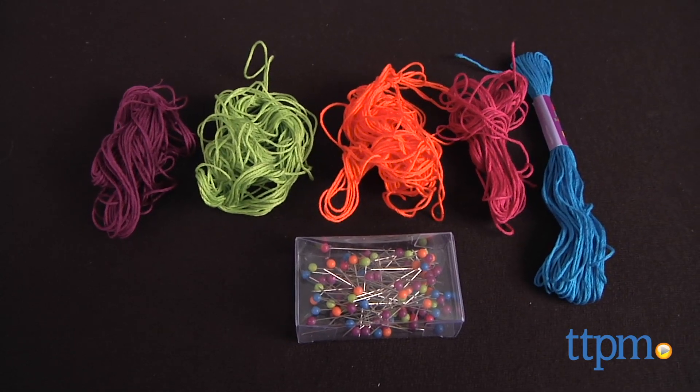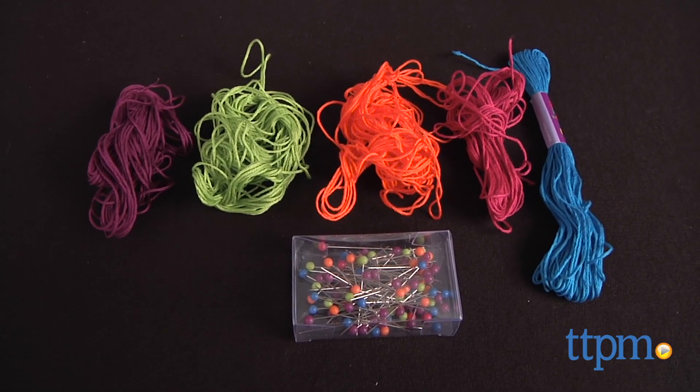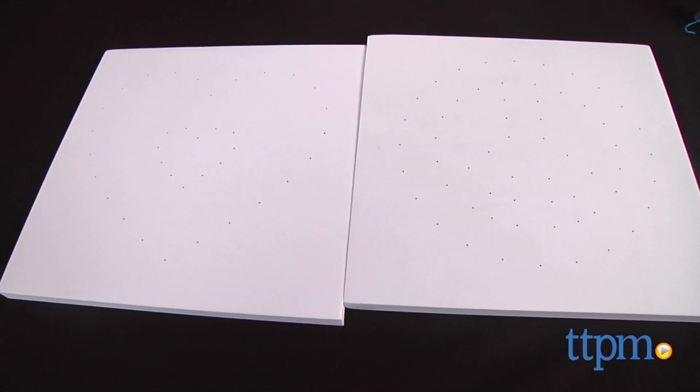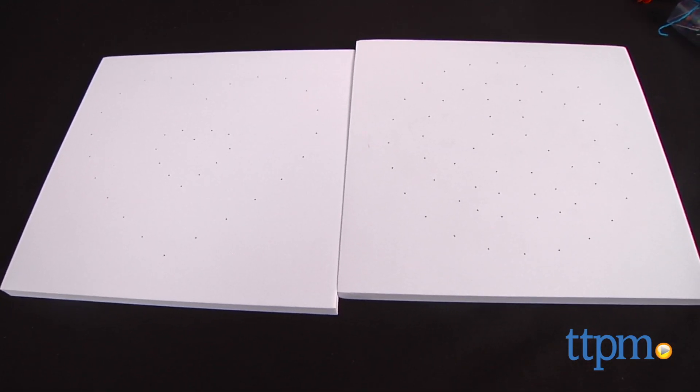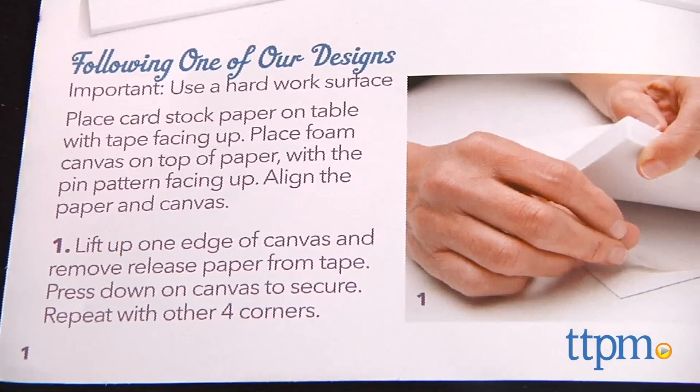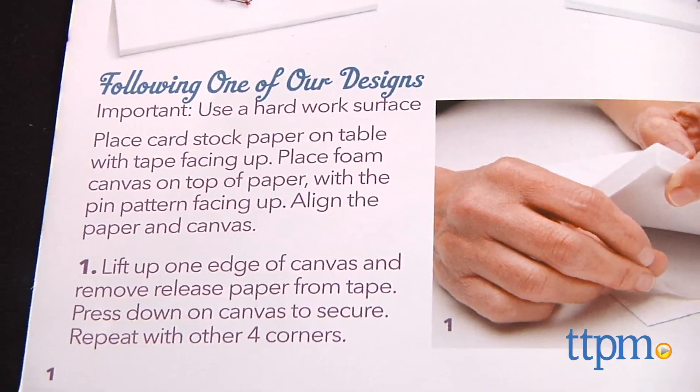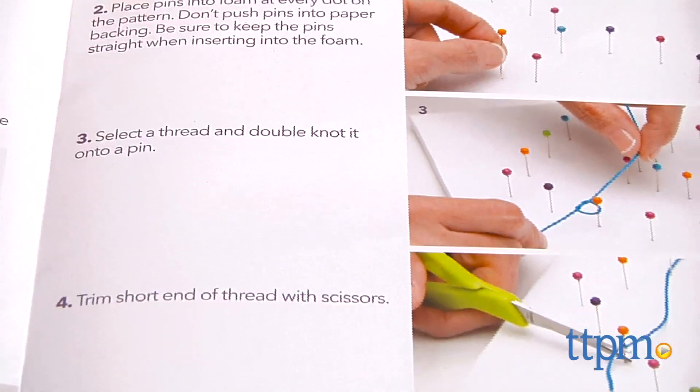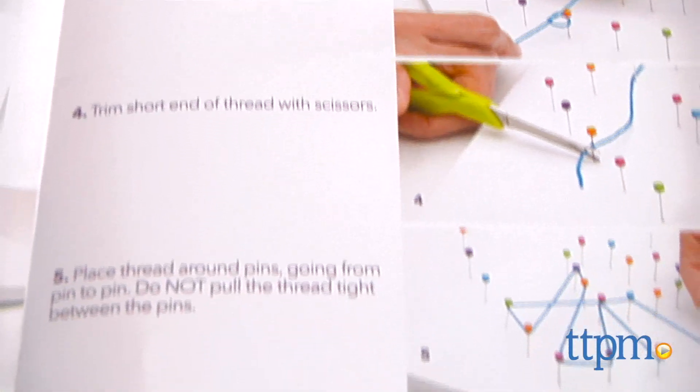This kit for girls ages 10 and up includes enough materials to make and display three string art canvases. You get three foam canvases with three different patterns, 170 multicolored ball head pins, four colors of embroidery thread, and three sheets of adhesive cardstock paper.